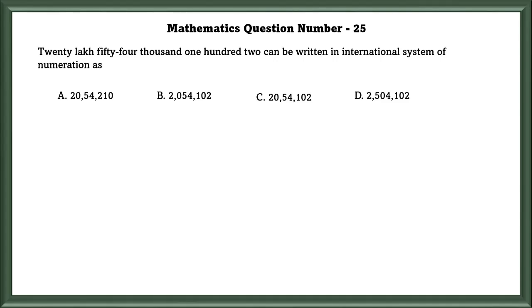Mathematics question number 25: 20,54,102 can be written in the international system of numerations as option B: 2,054,102.